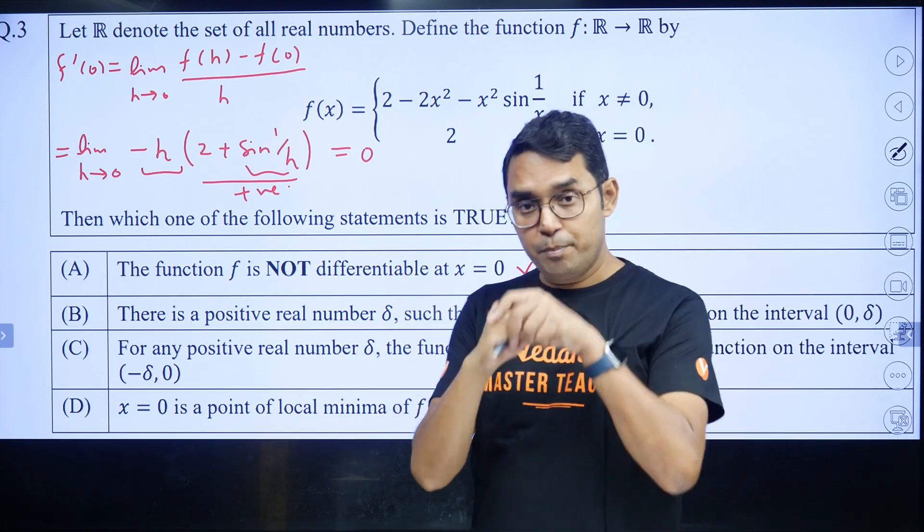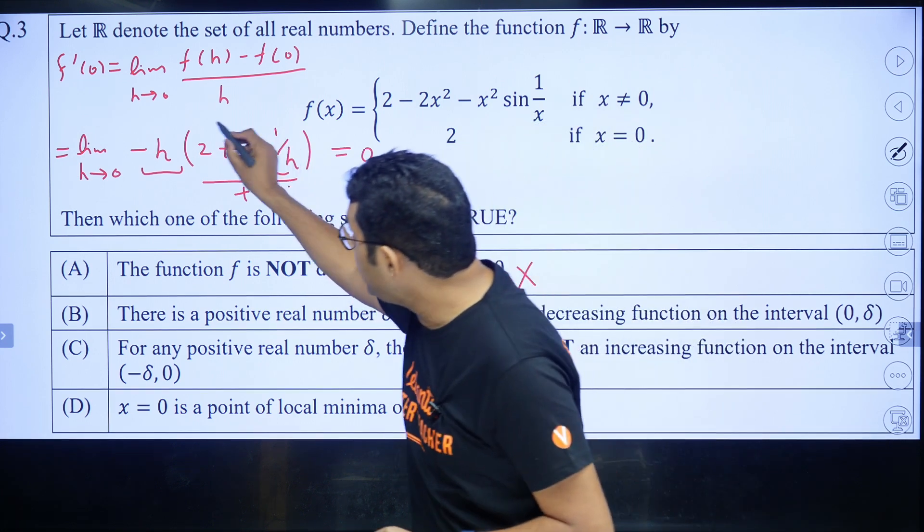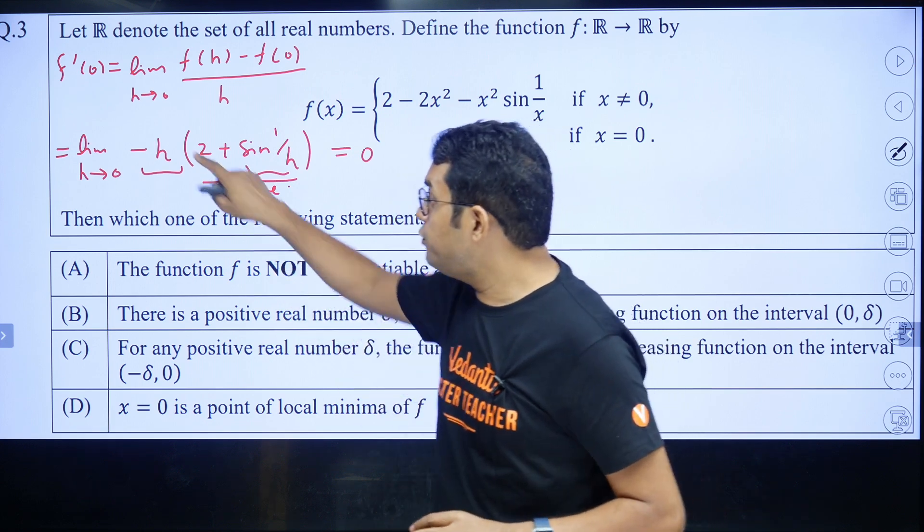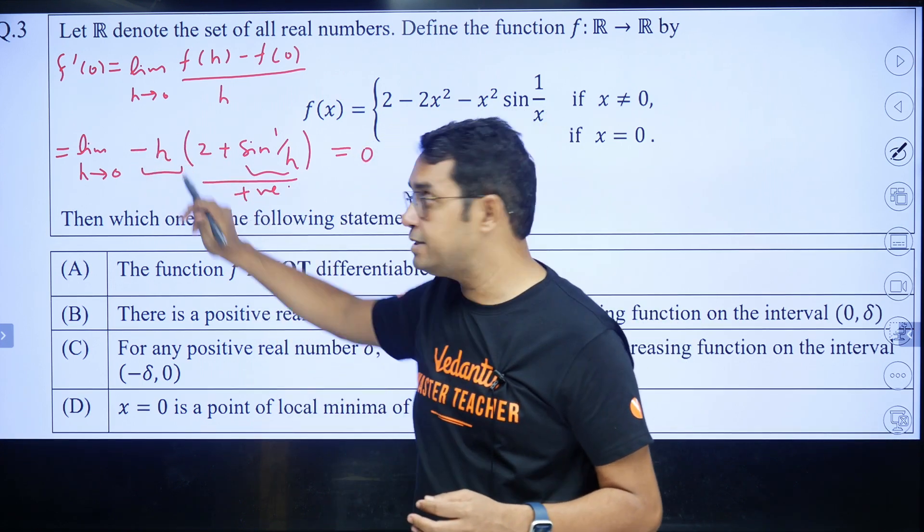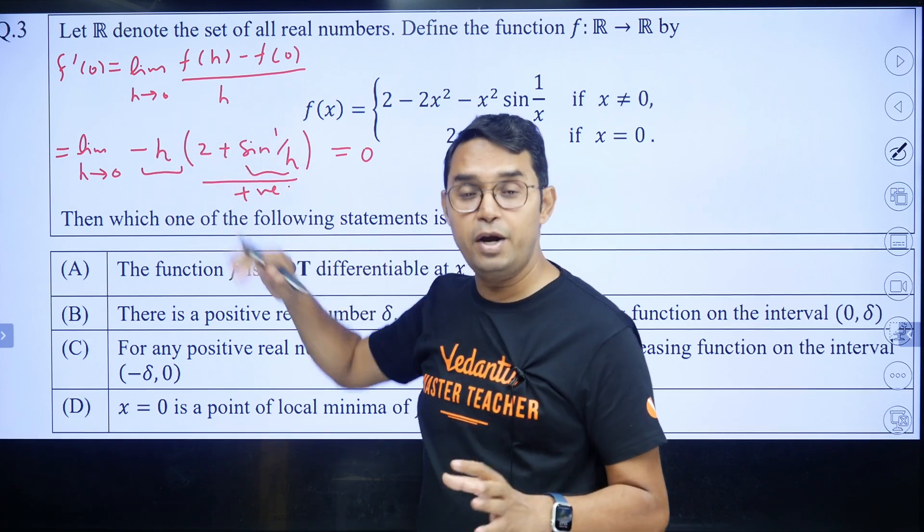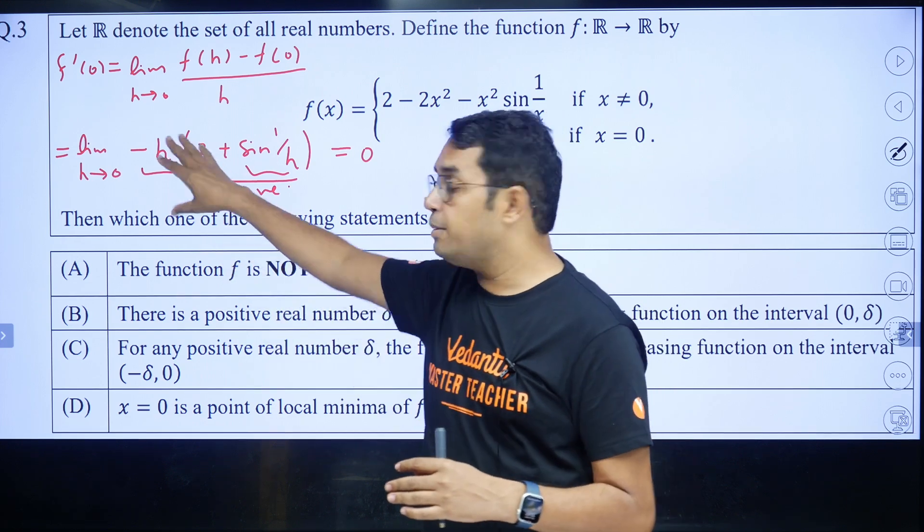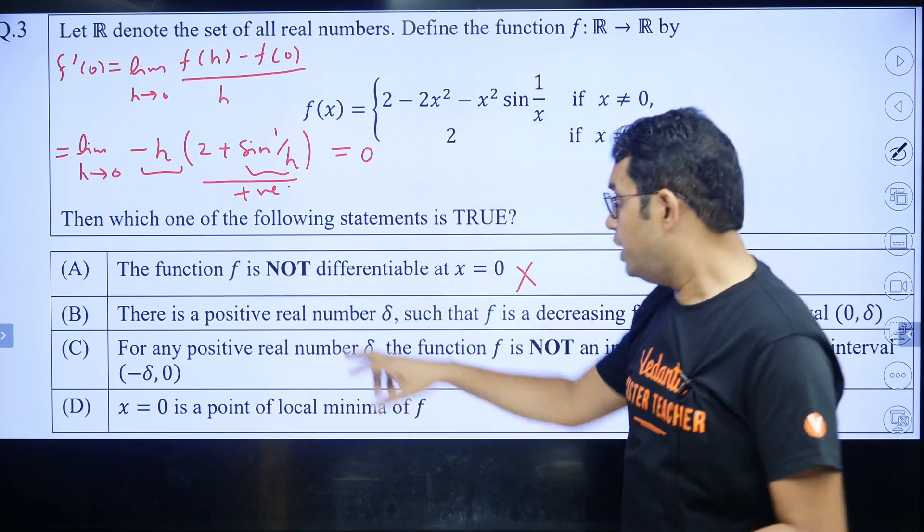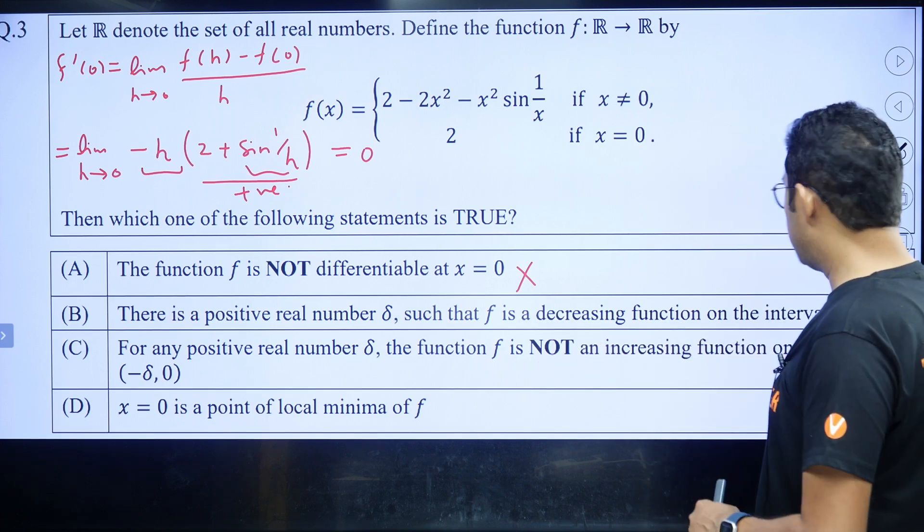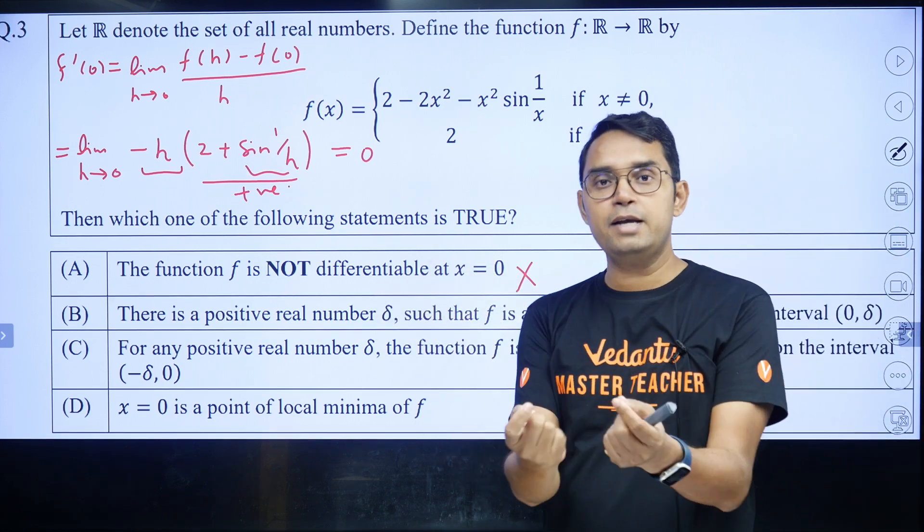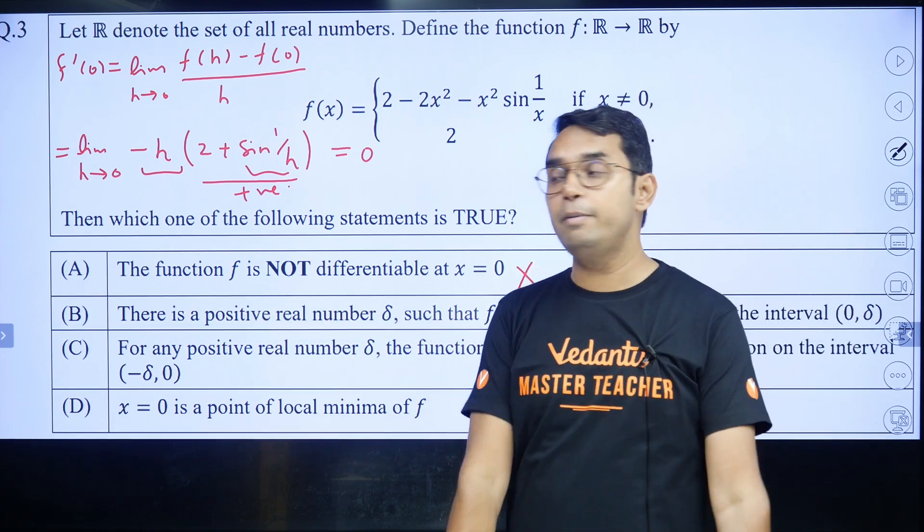Now this b option. Now many people have done one mistake. First I'll mention that mistake that by taking this expression, because this is positive. So if you're taking rhd, right-hand derivative, your h will be positive. And because minus sign is there, so entire thing will become negative. So it looks like it gives a feeling of that function will be decreasing for some h positive. So in this b option, there's a positive real number delta such that f is decreasing function on the interval zero to delta. So it looks like that if I take very small delta, this option b will become correct. That is absolutely wrong.